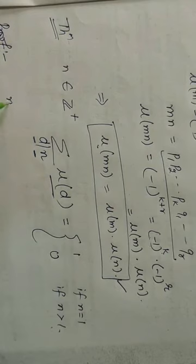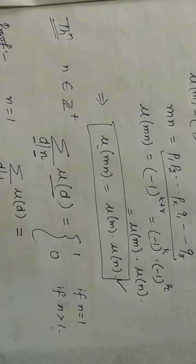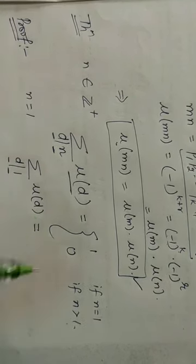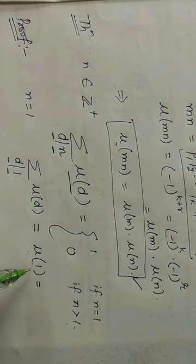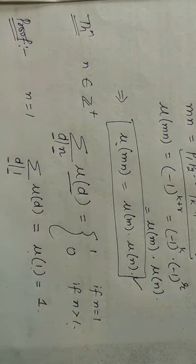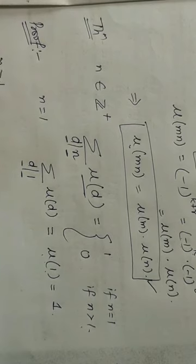Proof: If n = 1, then the only divisor of 1 is 1 itself, so Σ_{d|1} μ(d) = μ(1) = 1. This confirms the formula for n = 1.